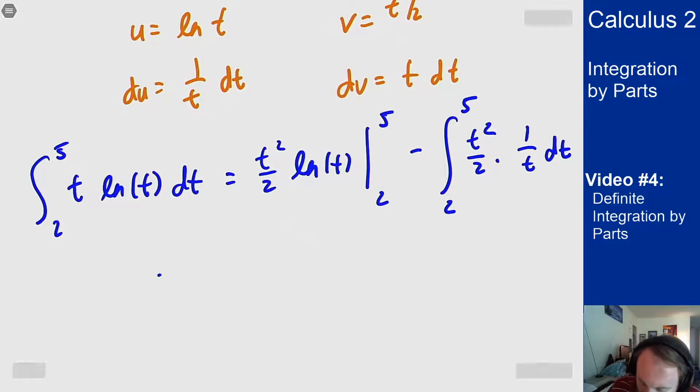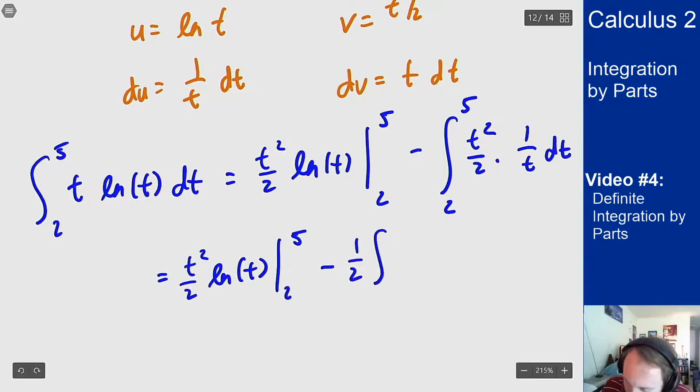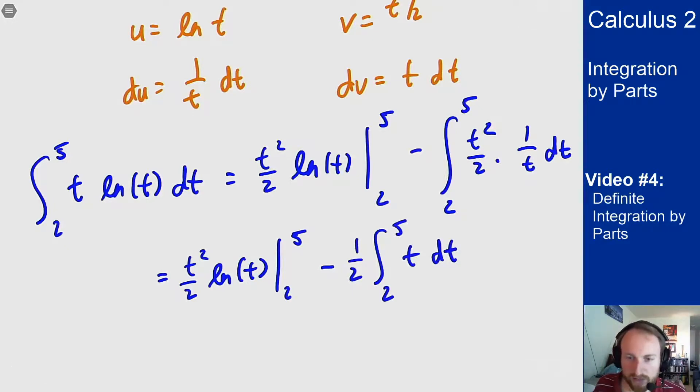Simplifying this out, I get a t squared over 2 log of t from 2 to 5 minus a 1 half integral from 2 to 5 of t dt, because the t squared and the t, one of those cancels out.